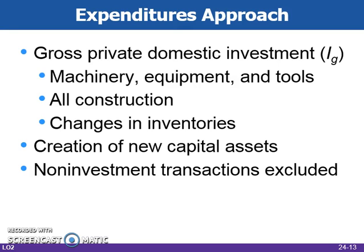The second component of the expenditures approach is gross private investment, which includes all final purchases of machinery, equipment, and tools by businesses, all construction, and changes in inventories. All of these items represent ways businesses invest in themselves. Construction also includes residential construction because homes could be rented to produce income.